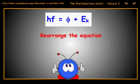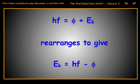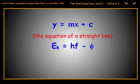Now I want you to rearrange the photoelectric effect equation so that you can plot a graph of maximum kinetic energy of the photoelectrons against the frequency of the incident radiation. Now that we've rearranged the equation, we get EK equals HF minus phi. This equation is in the same form as Y equals MX plus C.